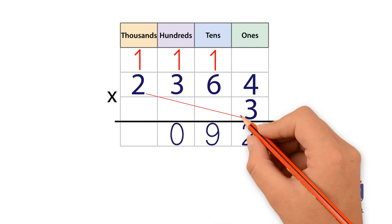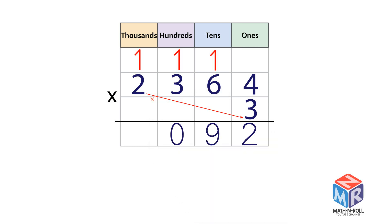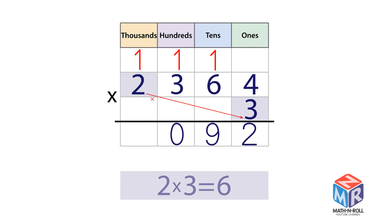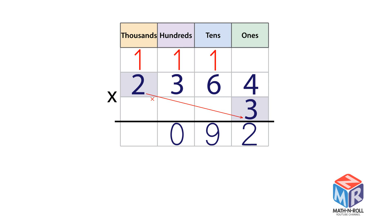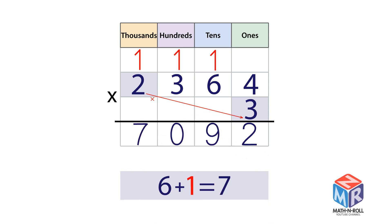Multiply the 1,000s. 2 × 3 thousands equals 6 thousands. Add the regrouped thousands: 6 thousands plus 1 thousand equals 7 thousands. The answer is 7,092.